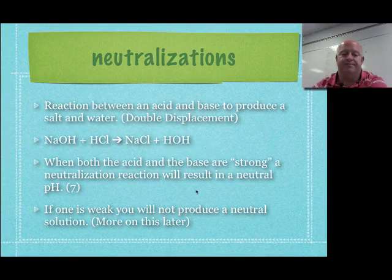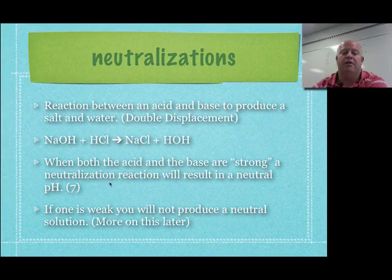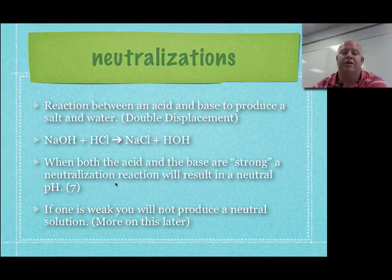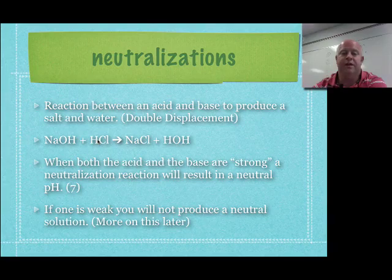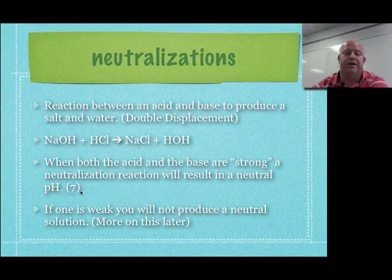In a neutralization reaction, when you put a strong acid and a strong base together — meaning they both completely ionize in solution — that neutralization will give you a pH of 7. So it's actually truly neutral. If you put equal amounts of each substance in, say one mole of each, you'd end up getting a neutral solution at pH 7. However, if you don't use equal amounts, you don't completely neutralize and all you do is shift your pH one way or the other.